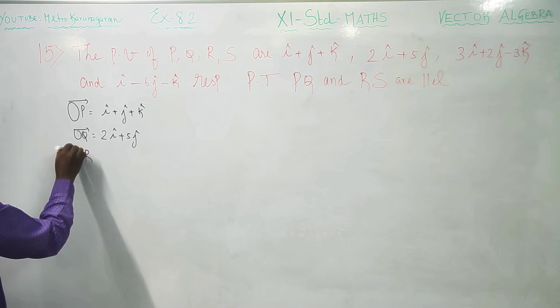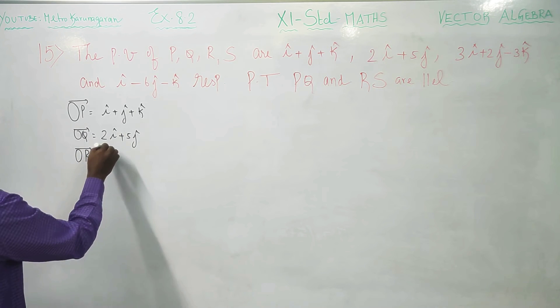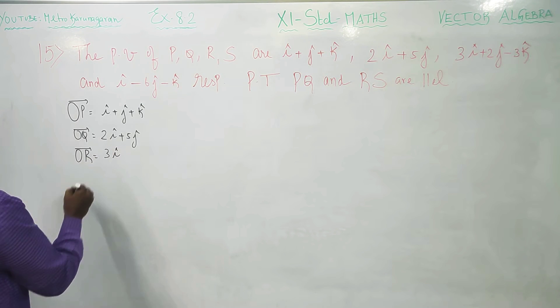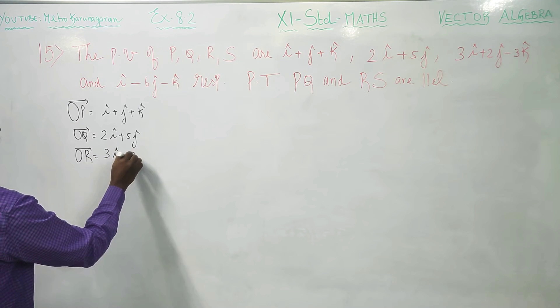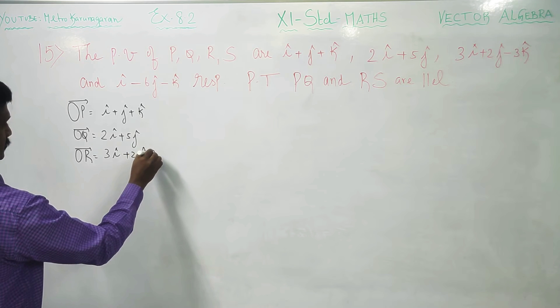Then after this, OR vector, OR vector is 3I plus 2J minus 3K, minus 3K.